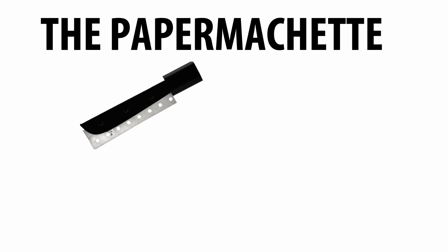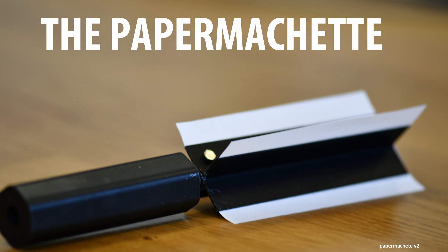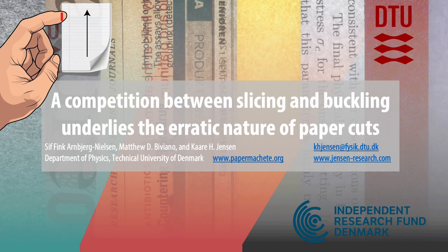So we built a paper machete. It uses paper scraps as a blade and can cut into fruits, vegetables, and meat. Here's the next version with four blades. Thanks for tuning in.